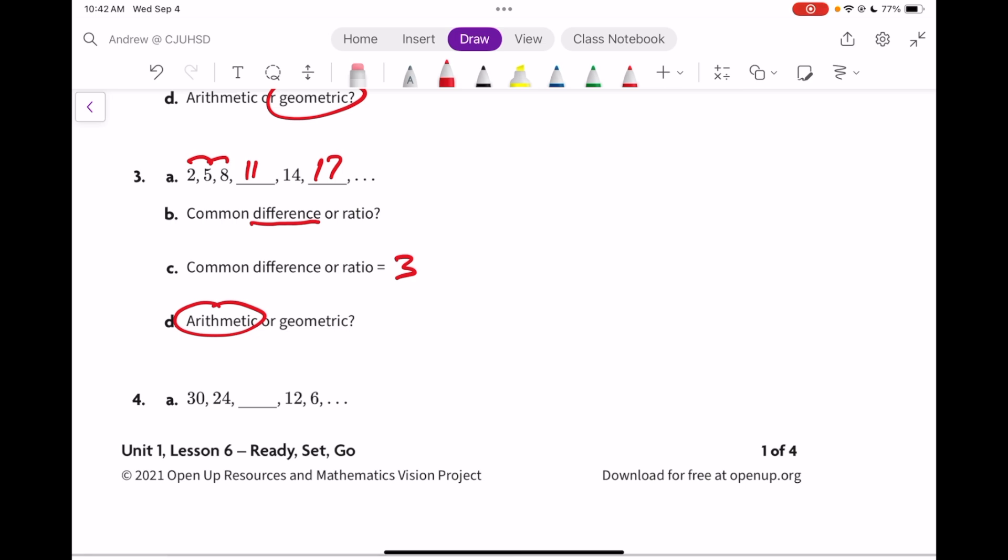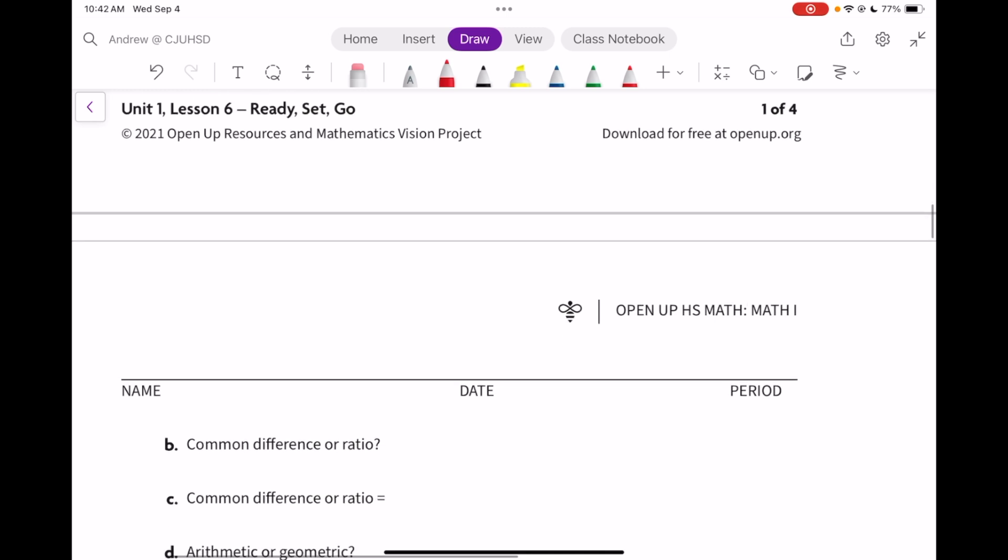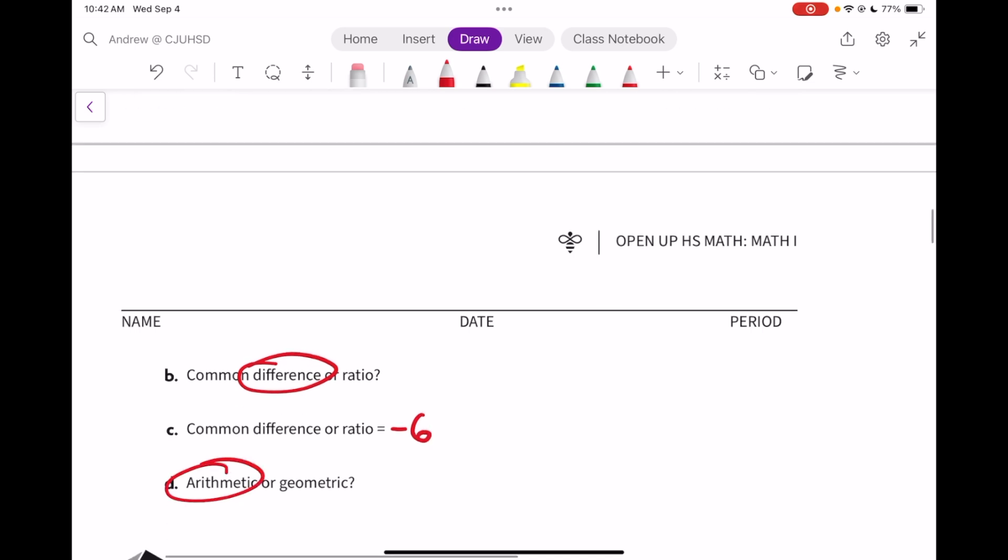And then on number 4, we're subtracting 6. So subtract 6 here and you're going to get to 18. Keeps on subtracting 6 as you go along. That means that it is a difference. It's negative 6 because it's going down, and it is arithmetic.